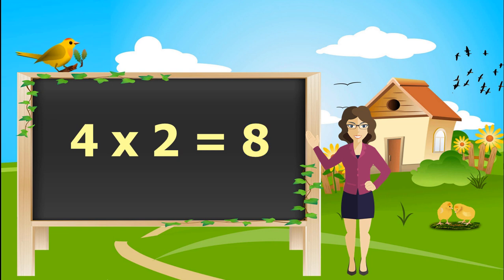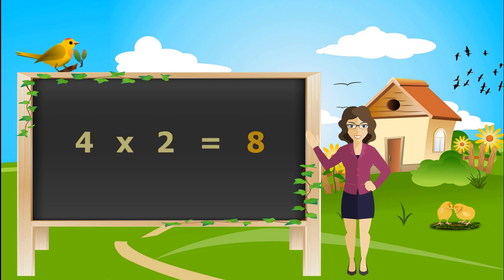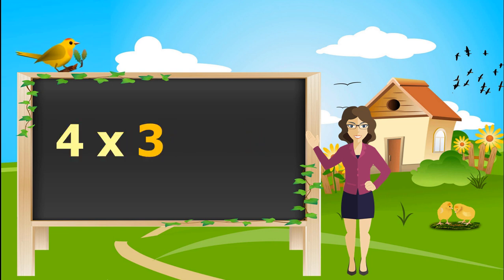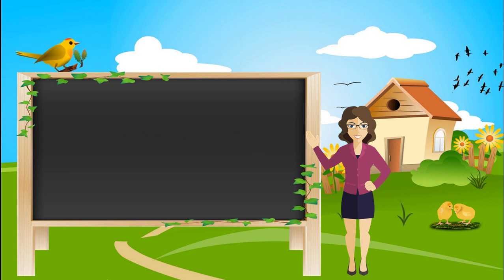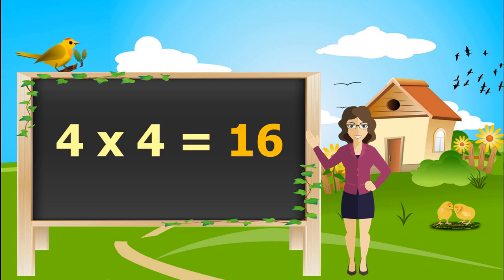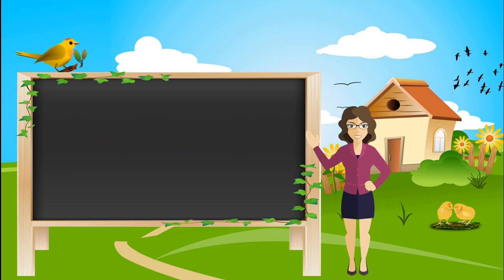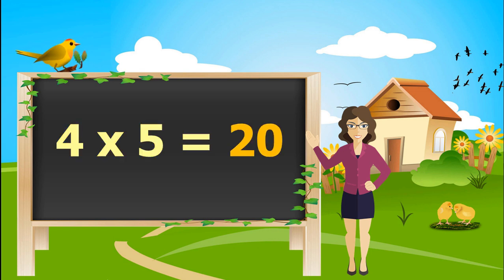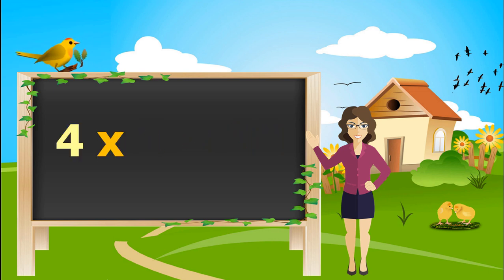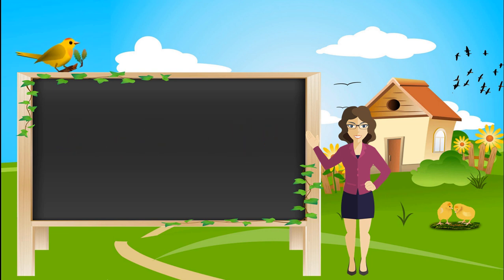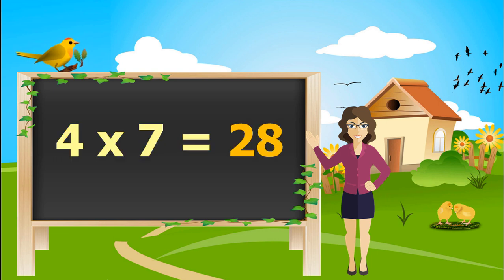4 times 1 is 4. 4 times 2's are 8. 4 times 3's are 12. 4 times 4's are 16. 4 times 5's are 20. 4 times 6's are 24. 4 times 7's are 28.